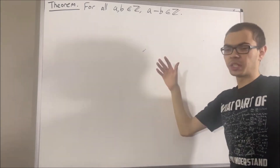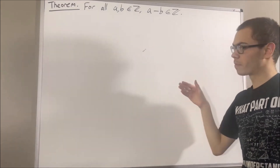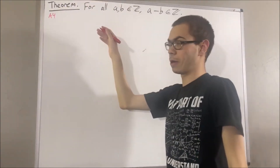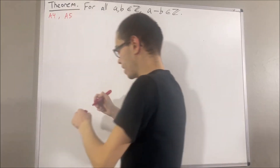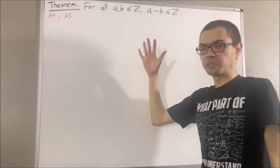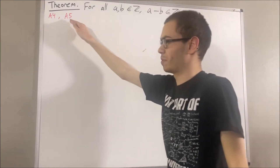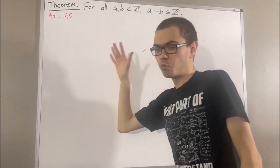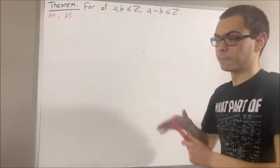In this series, we are using a list of 10 axioms for the real number system, and I'll leave that list of axioms in the description below. Axiom 4 tells us about the existence of the real number 0, and axiom 5 tells us that every real number has a negative, so for all real numbers x, x plus the negative of x is equal to 0. Using the concept of the negative of a real number, we define subtraction so that given any real numbers a and b, we define a minus b to be a plus the negative of b.